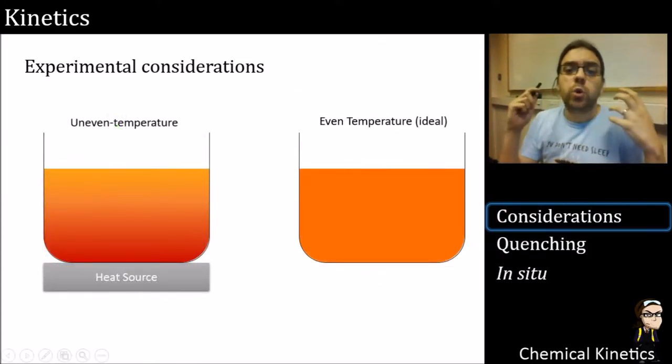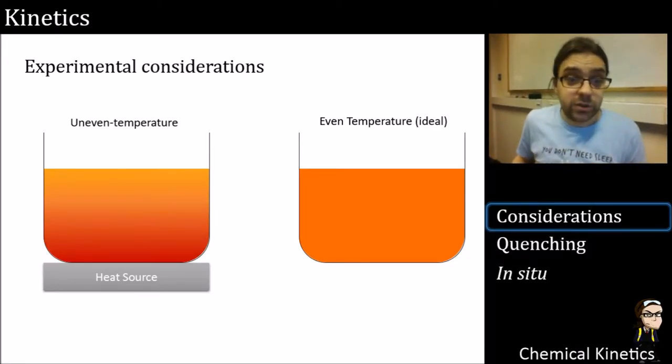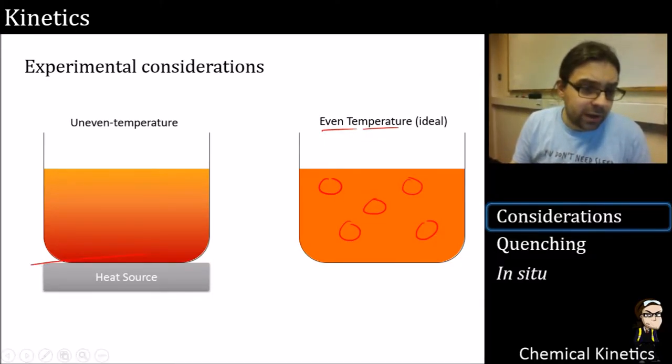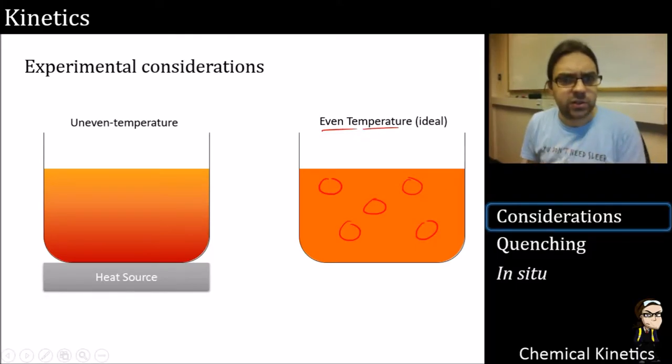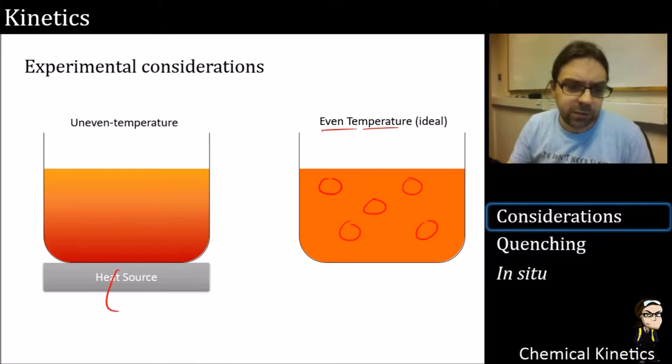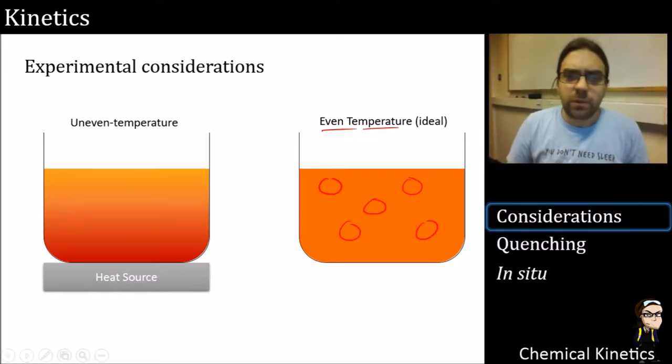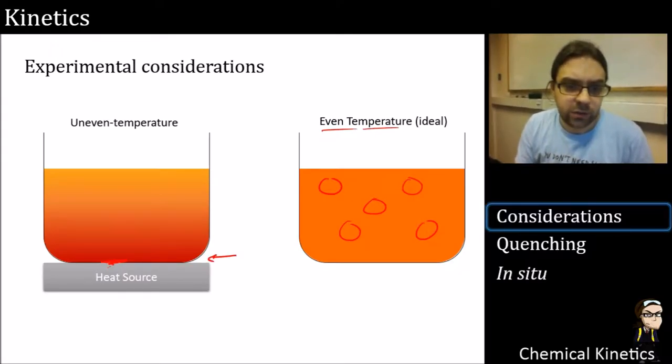So next, we want even temperature. This is for the exact same reason. If things are even throughout here, if we take a sample from here or we sample it here, we can see that it will be running at the same rate. Here, however, is what you might expect in a lab. You might be sticking something on a hot plate or something. I was going to draw this with a flame underneath and then realized we don't actually use them, do we? We use hot plates.